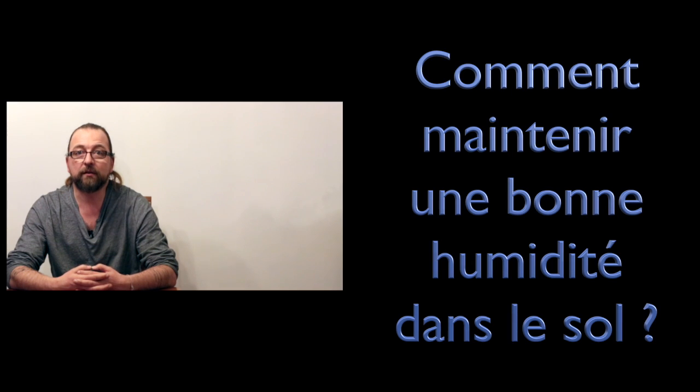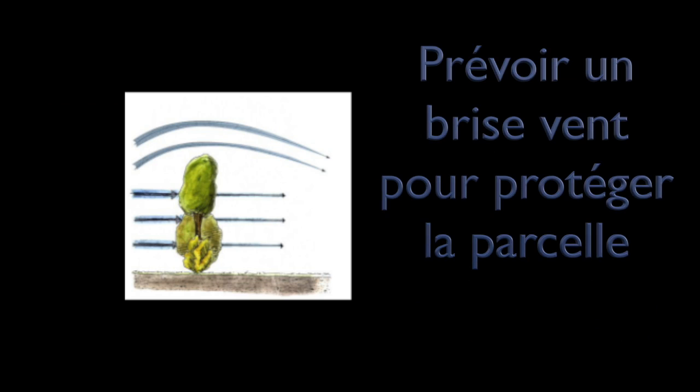Alors on va voir ensemble comment faire maintenant pour favoriser un petit peu une bonne rétention en eau au niveau du sol de votre jardin. Le vent dessèche énormément les sols, au moins autant que les hautes températures, et donc l'installation d'un brise-vent qui se veut perméable à 50%, ça c'est très important, et bien ça peut être également une bonne solution.